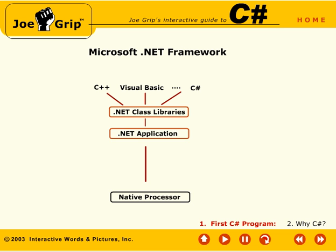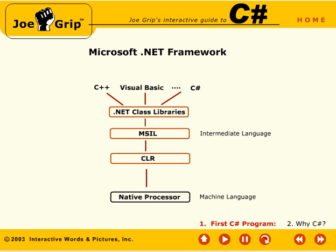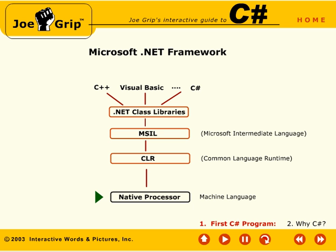Programs written in the .NET platform compile into an intermediate language, not directly into the native processor's machine language. The Microsoft Intermediate Language, or MSIL, is a processor-independent set of instructions designed to be executed in a managed and controlled environment. It is the Common Language Runtime, or CLR, that actually executes these instructions, converting them to native processor code whenever necessary. If you are familiar with Java, MSIL is equivalent to Java byte code and the CLR is equivalent to the Java Virtual Machine.